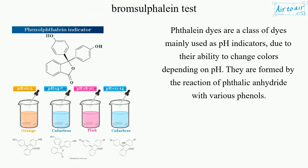Thalin dyes are a class of dyes mainly used as pH indicators, due to their ability to change colors depending on pH. They are formed by the reaction of phthalic anhydride with various phenols.